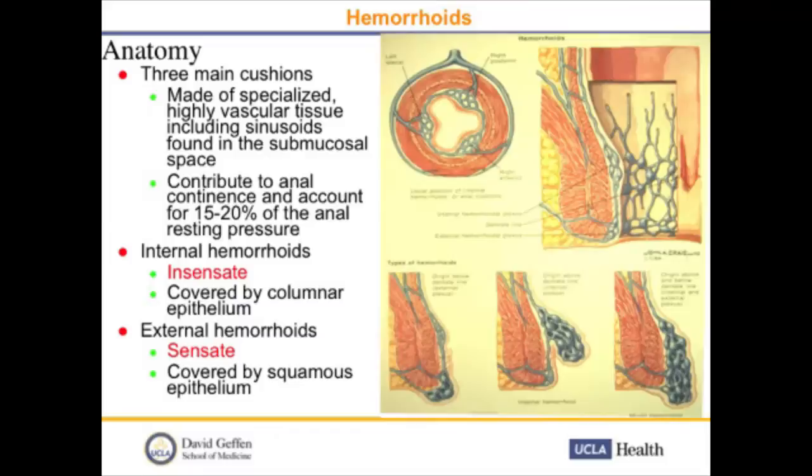The internal hemorrhoids are insensate and covered by columnar epithelium, so they're amenable to office-based procedures. The external hemorrhoids are sensate and covered by squamous epithelium — these need to be taken care of usually in the operating room. It's important to get a very accurate history and then to perform a thorough examination.